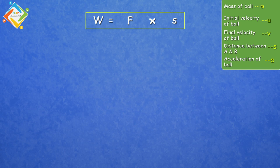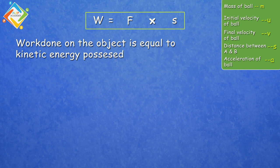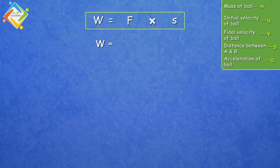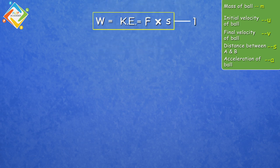We already studied that work done on the object is equal to kinetic energy possessed by the object. So in this condition, W is also equal to kinetic energy. In that formula, we will equate F into S equals kinetic energy. Let's mark it as equation number 1.